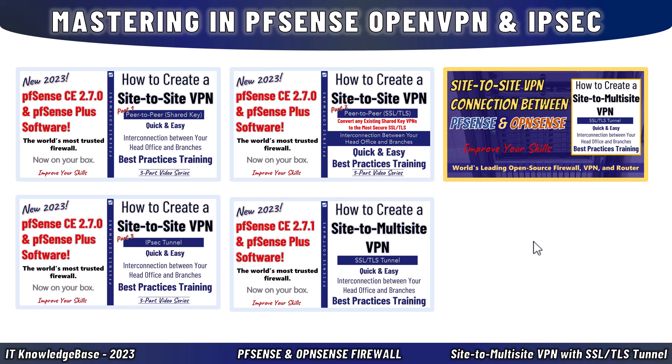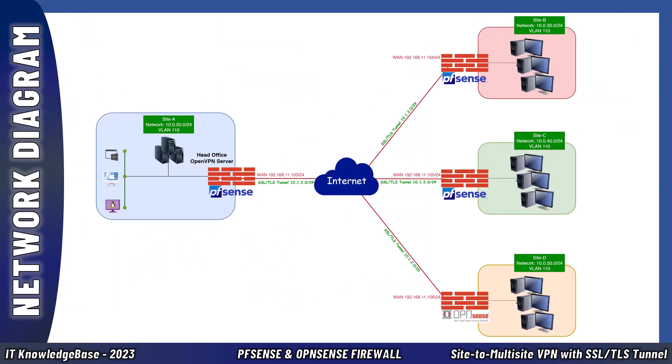Now let's understand the typical pfSense firewall network. We have four sites: Site A is our head office on the left, Site B is on the top right, Site C is at the middle bottom right. I have already established a site-to-site VPN over OpenVPN SSL/TLS mode between Sites A, B, and C, and it's working fine. Site D is still not connected with the head office, and this video shows how to connect it.